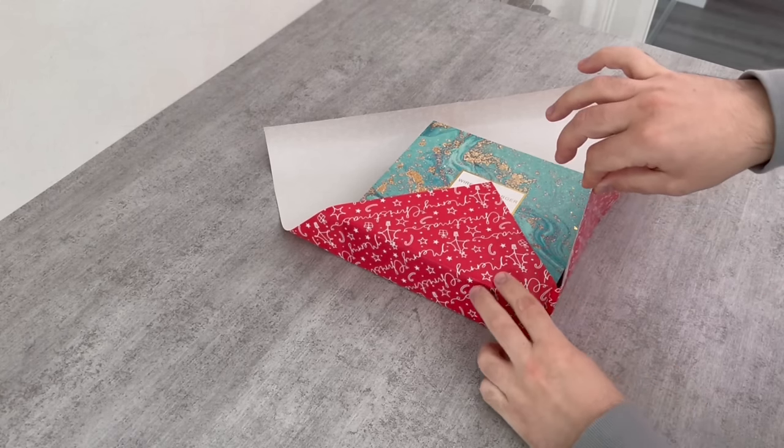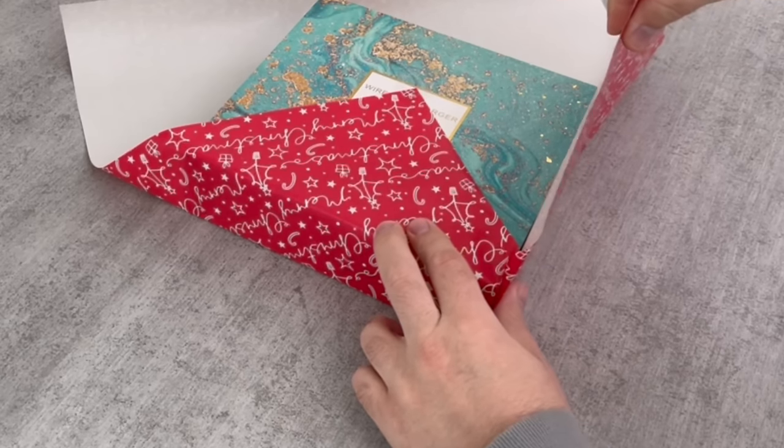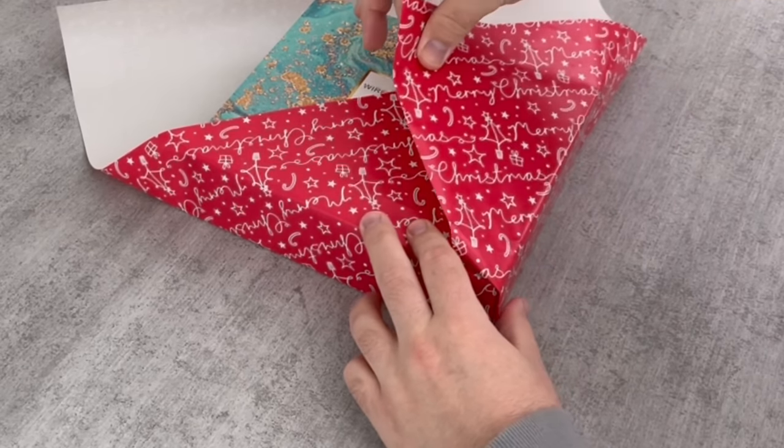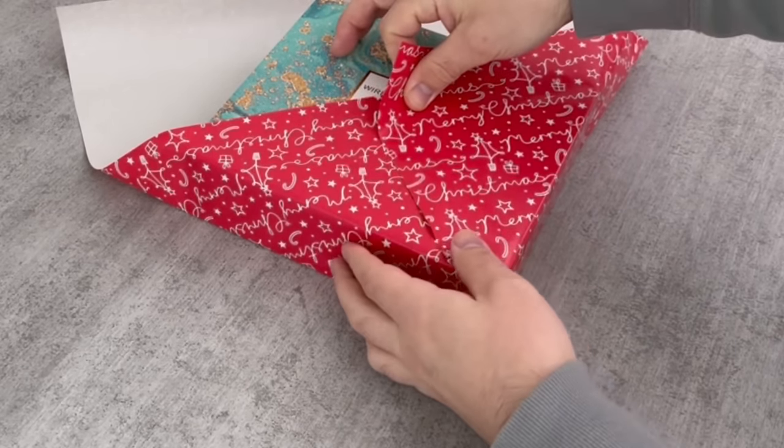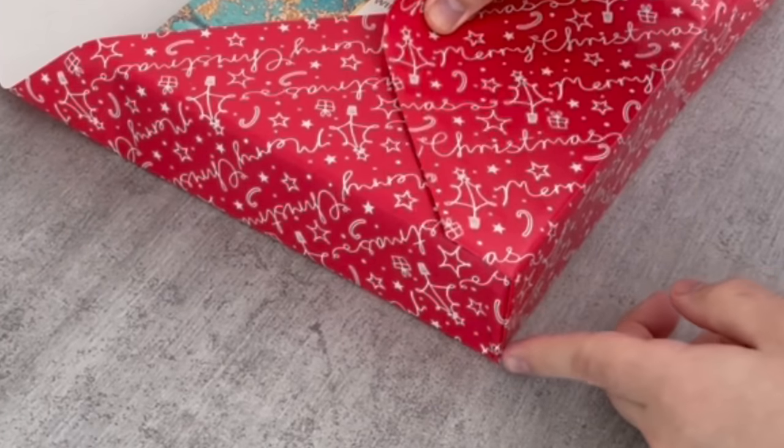Now take the first side and press it upwards here too. Make sure that the corner is perfectly flush with the corner. You may need to push it in or out a little. As soon as this is the case, you can wipe the edge once and fix the whole thing at the top again with a piece of adhesive tape.